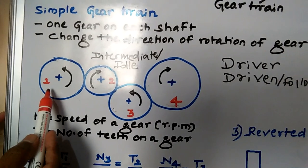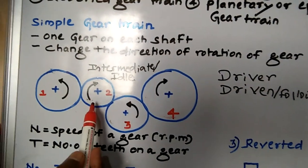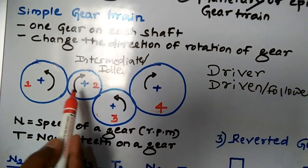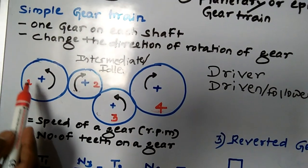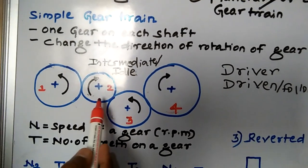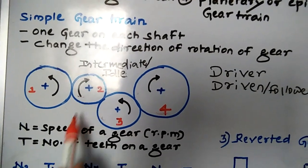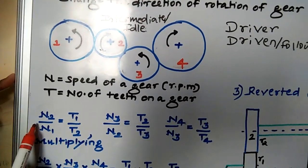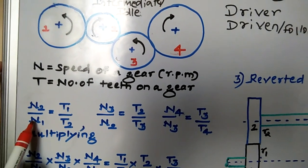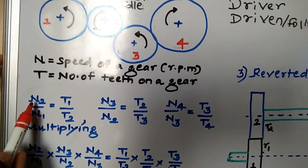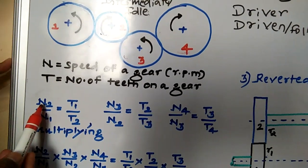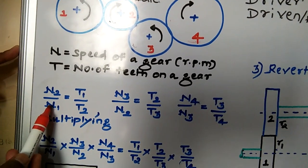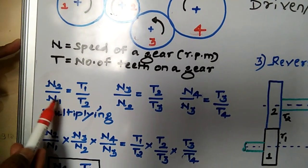I will find the velocity ratios. First, I will take gear 1 as the driver and gear 2 as the driven. The velocity ratio for gears 1 and 2 is the ratio of the speed of the driven gear to the driver gear, that is N2 by N1, which equals T1 by T2.